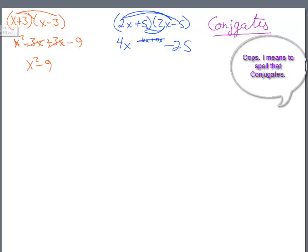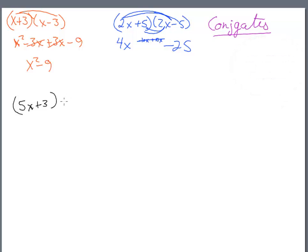So for example, if we had 5x plus 3 and we were going to multiply this by something to get squared both of them, we would choose its conjugate, which would be 5x minus 3. Then when we multiply, we get 25x squared. The middle terms go away, and we get minus 9.